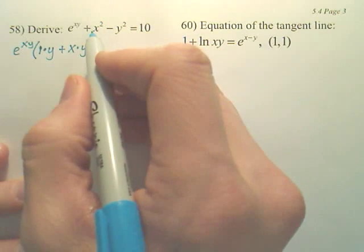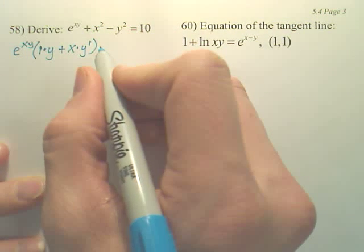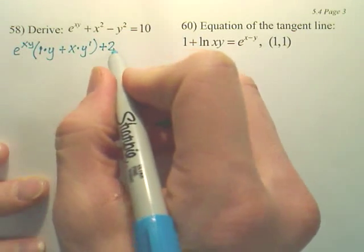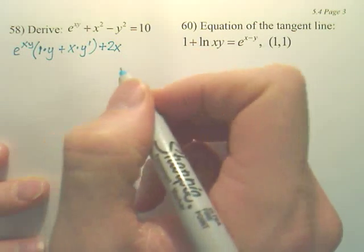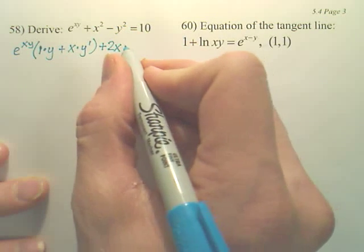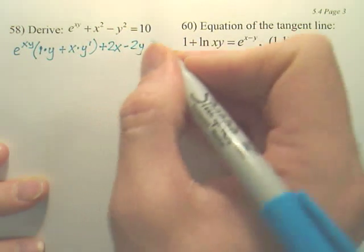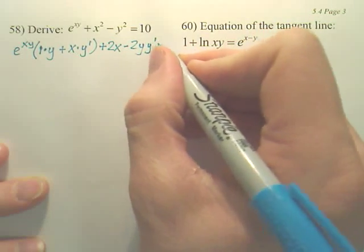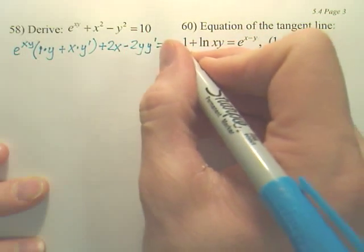Derivative of 2x. The derivative of x squared is 2x, x prime, but don't worry about that. And derivative of y squared is 2y, but now you need the y prime. And the derivative of 10 is 0.